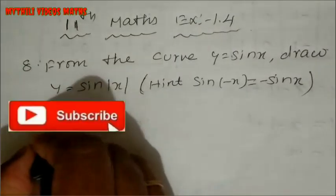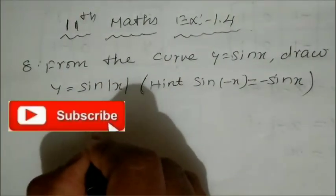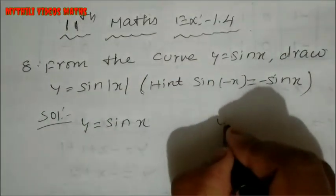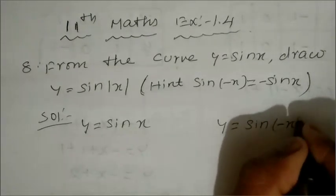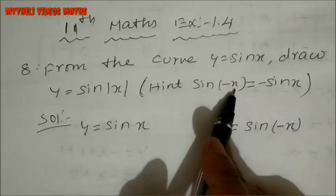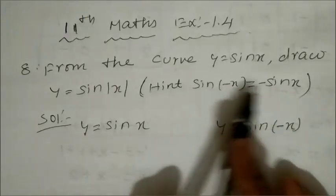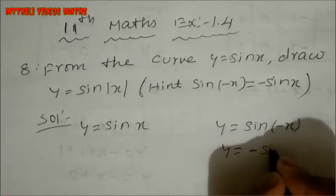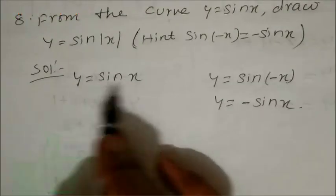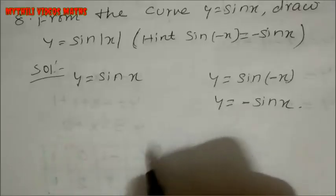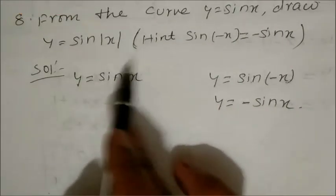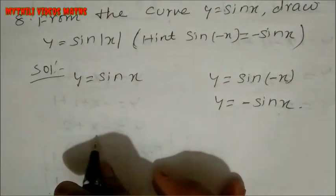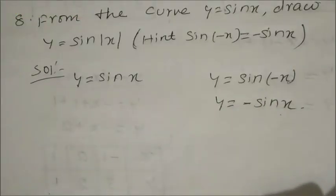First, y equal to sin x. For mod x, sin of minus x equals minus sin x — this is the formula. So y equal to sin of minus x is minus sin x. You can use a table to draw it. This is the reflection — y is equal to minus sin x on the left side.